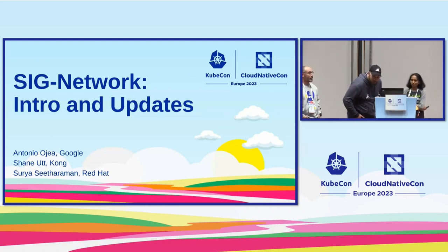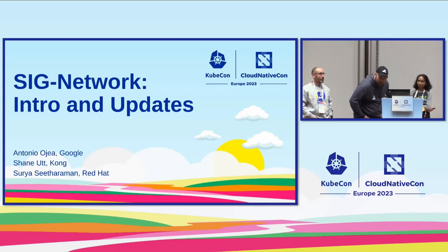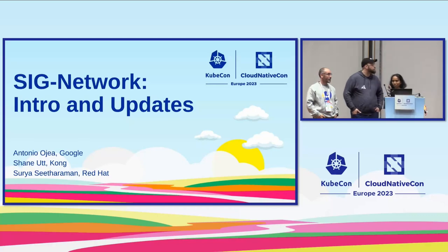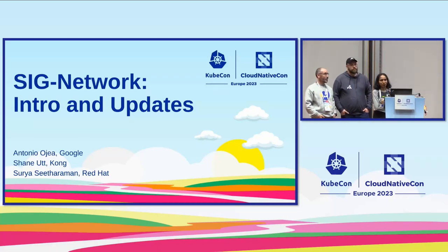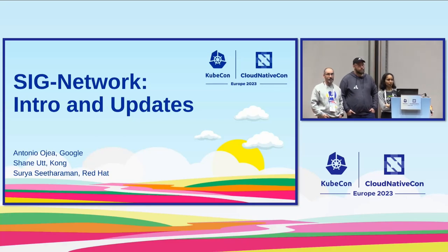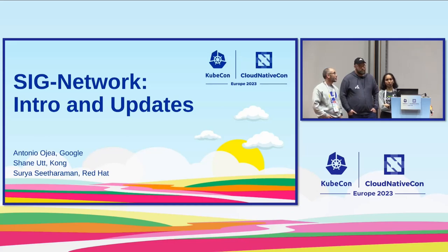I'm Shane Nutt. I work at Kong on Kubernetes Networking. I'm a chair of SIG Network and a maintainer of Gateway API. I'm Surya, and I'm an engineer working on the Red Hat OpenShift networking team. I mostly work on the SIG Net Policy API working group, and together with Shane and Antonio, we're going to give the SIG Network intro and updates.